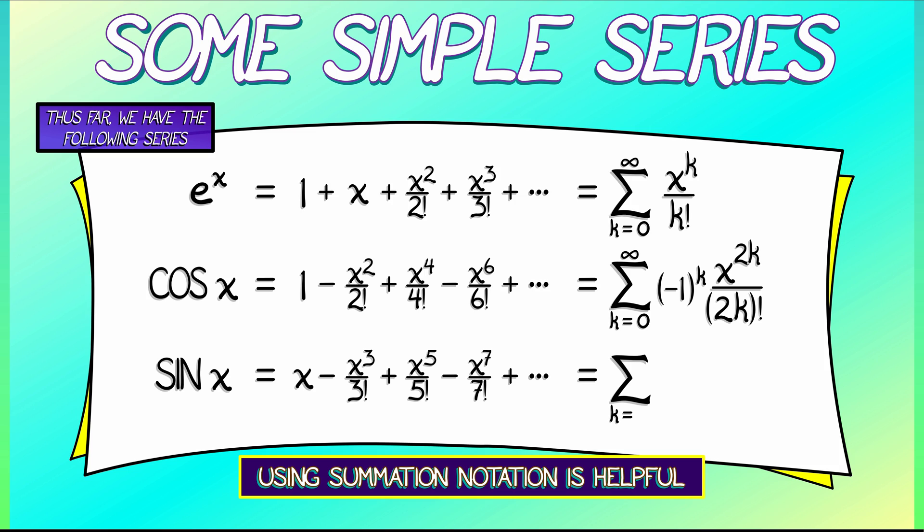And for sine of x, we have the sum k goes from 0 to infinity, negative 1 to the k, x to the 2k plus 1, divided by quantity 2k plus 1 factorial. Now, these are all pretty important to our story. It would be a good idea to memorize these three series.